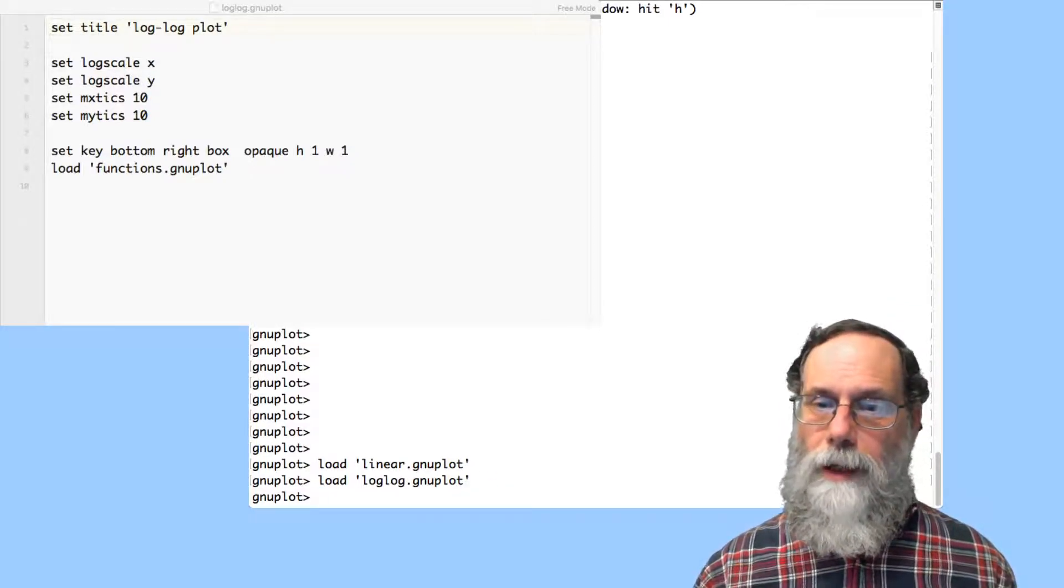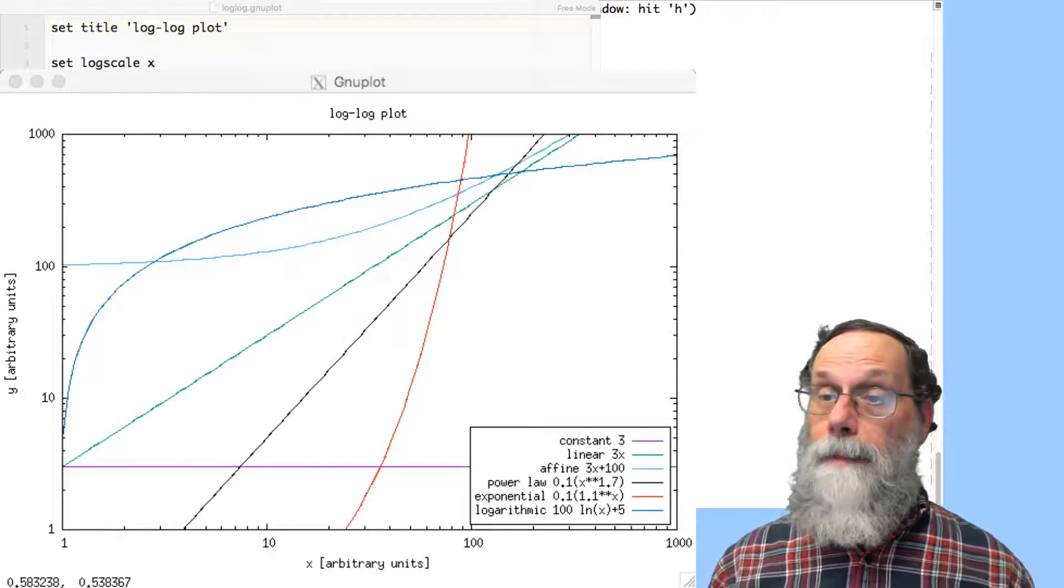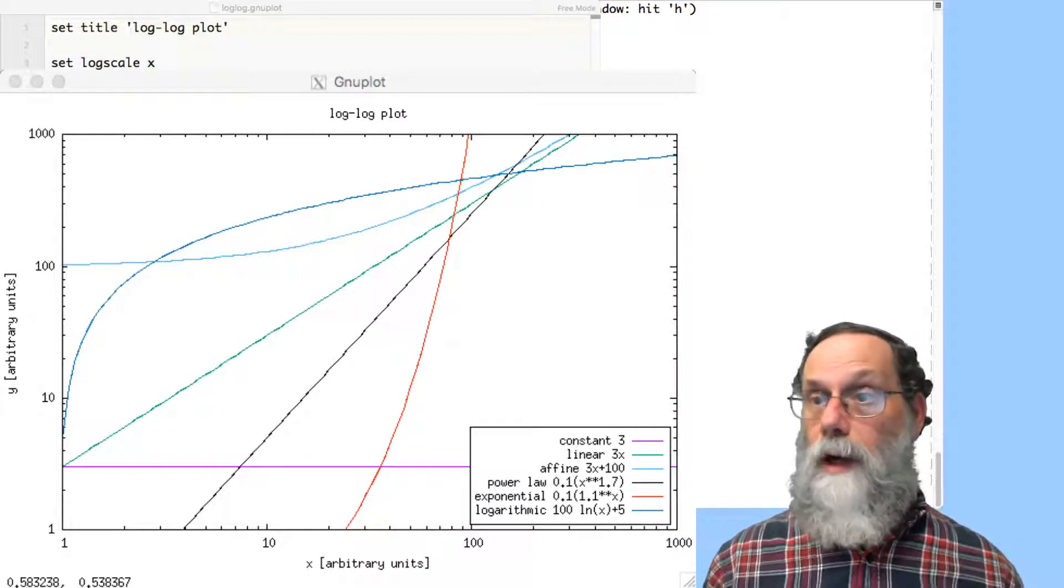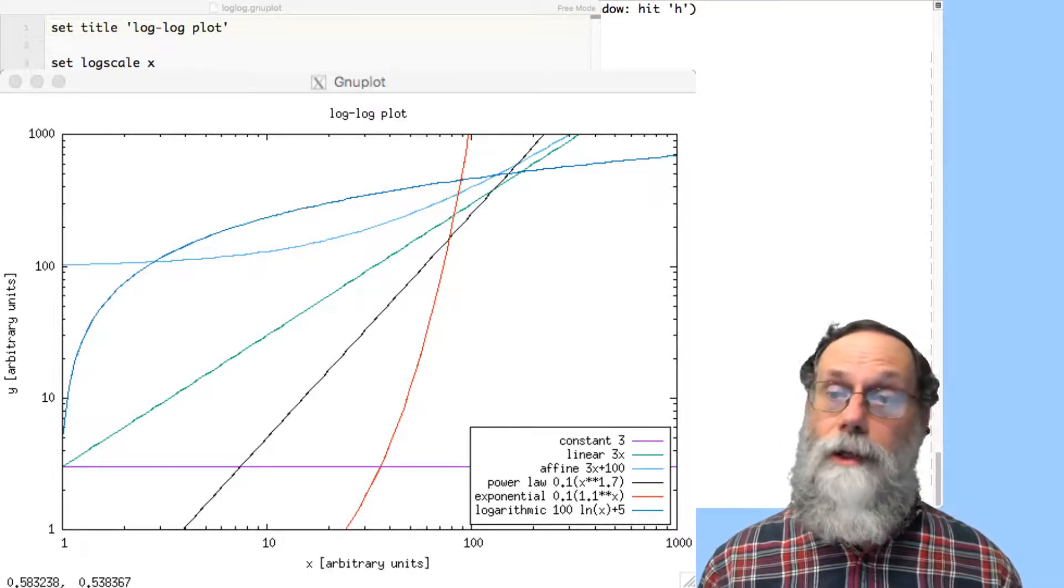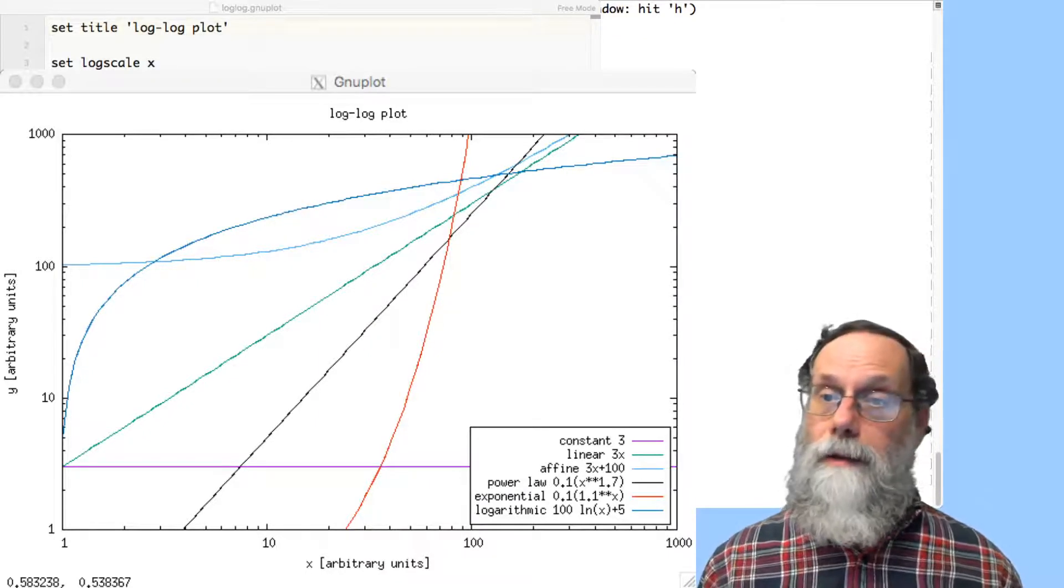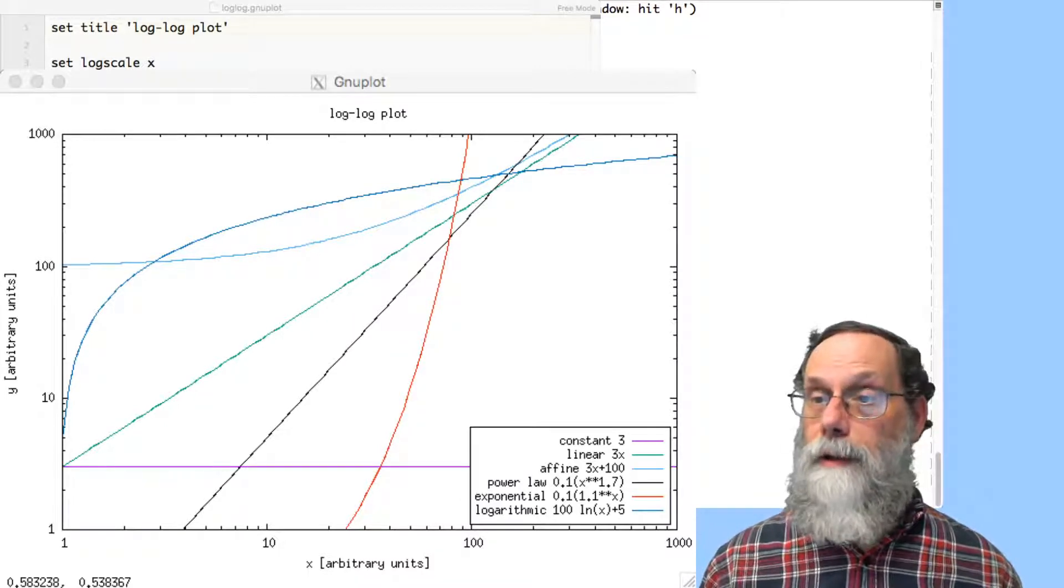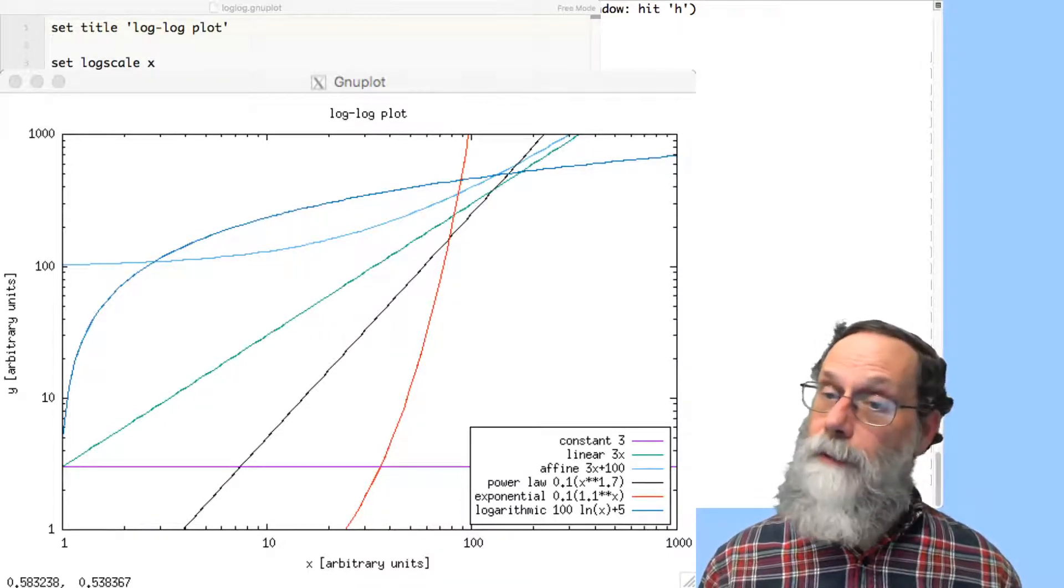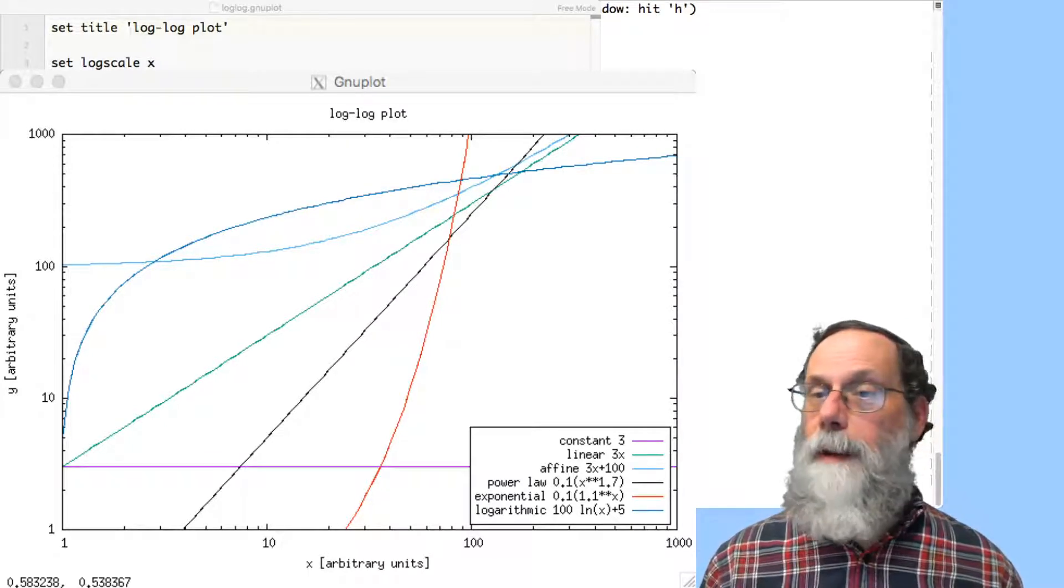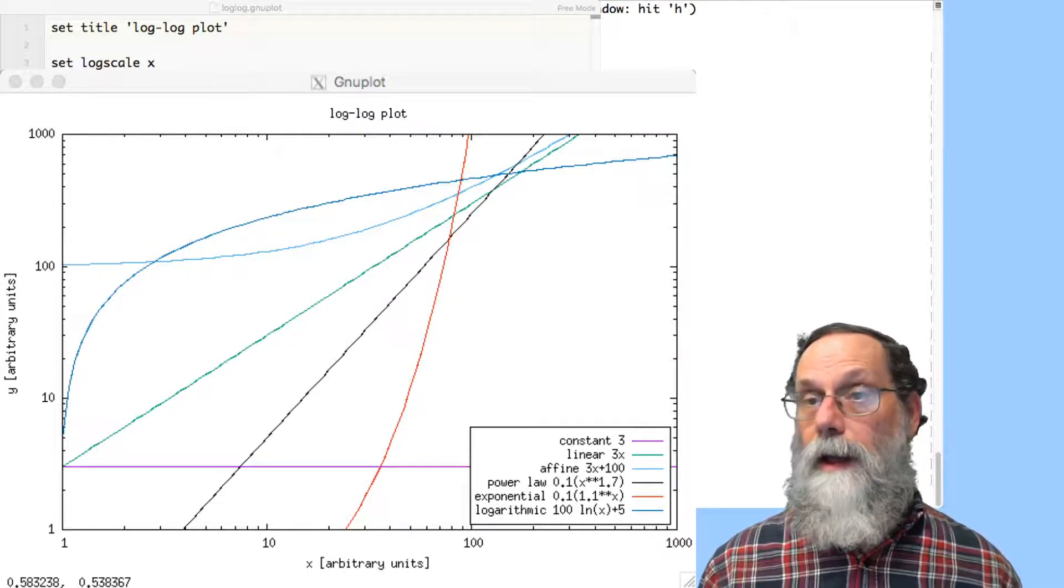Now we've got some straight lines again. The purple is still straight. Constant 3 is still constant 3. As I said, constants are really also power laws because that can be thought of as 3x to the zero. And the green line, that's still straight. Also, the linear function 3x is still straight. We can think of that as 3x to the first. It's still a power law. And then the new one that's straight is the power law 0.1 x to the 1.7. And that's a straight line.